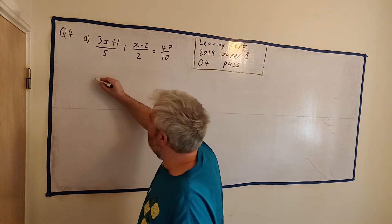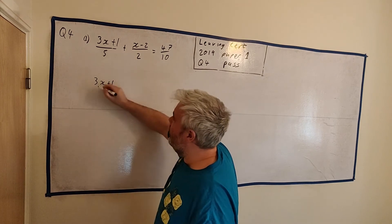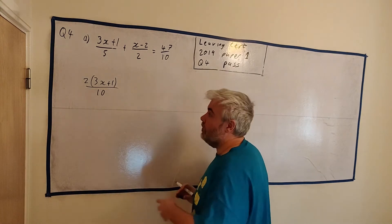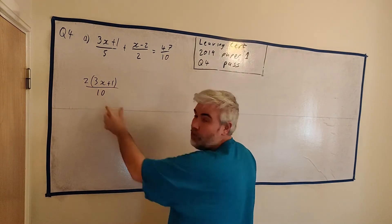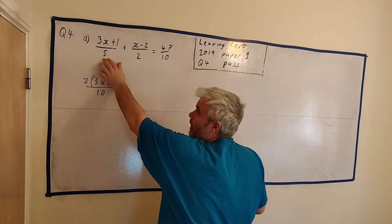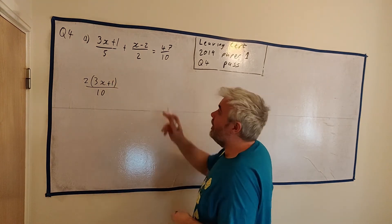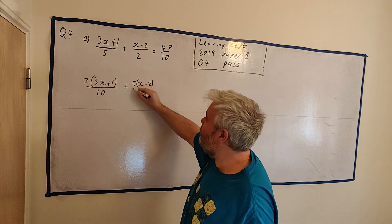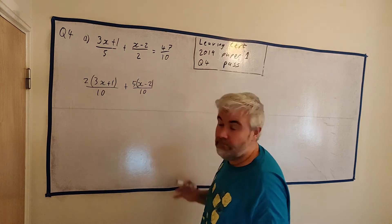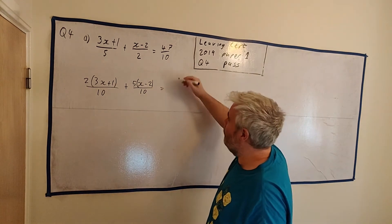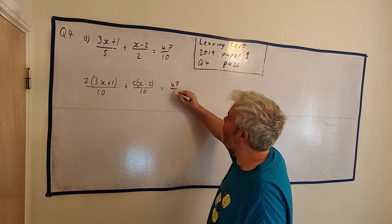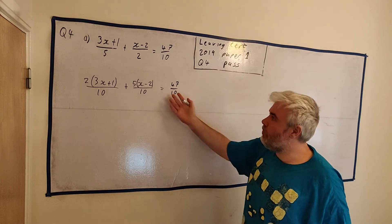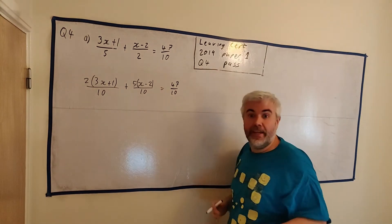Here's how I'll do that. For the first fraction, 3x plus 1 over 5, I multiply the top and bottom by 2 — giving a denominator of 10. For the second fraction, x minus 2 over 2, I multiply top and bottom by 5 — also giving a 10 on the bottom. For the last fraction, 47 over 10, I multiply top and bottom by 1, or just leave it alone. Now all fractions have the same denominator, which makes them much easier to work with.